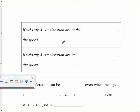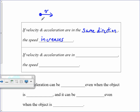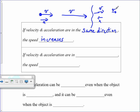If velocity and acceleration are in the same direction, then the speed increases. Remember, these are vector quantities, so they all have directions associated with them. For example, if I'm traveling in this direction with a certain velocity, and my acceleration is also in this direction, then as I move further along in time, my velocity is going to increase. However, if my velocity and my acceleration are in the opposite direction, then as I move further along, my velocity is actually going to decrease.